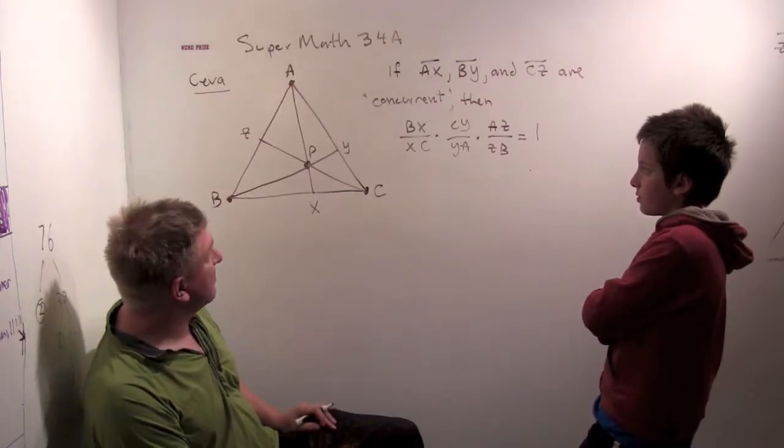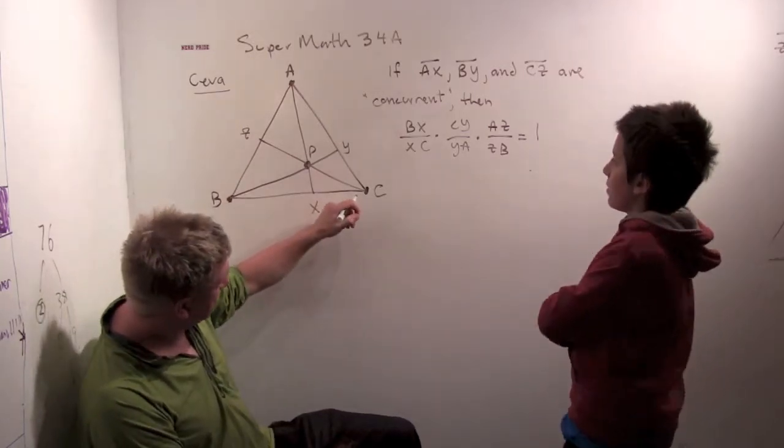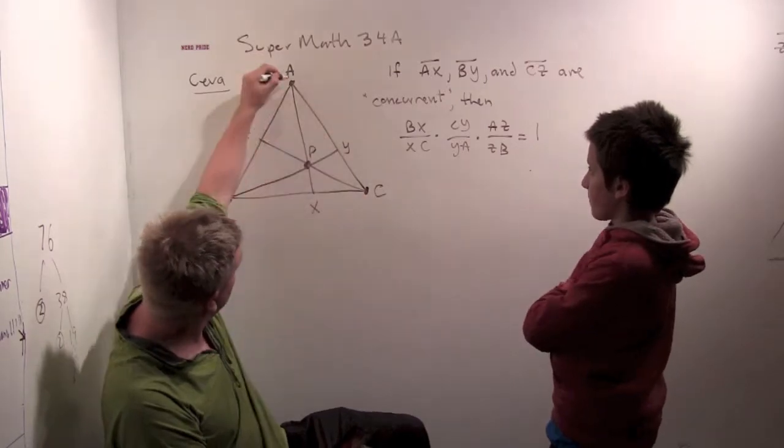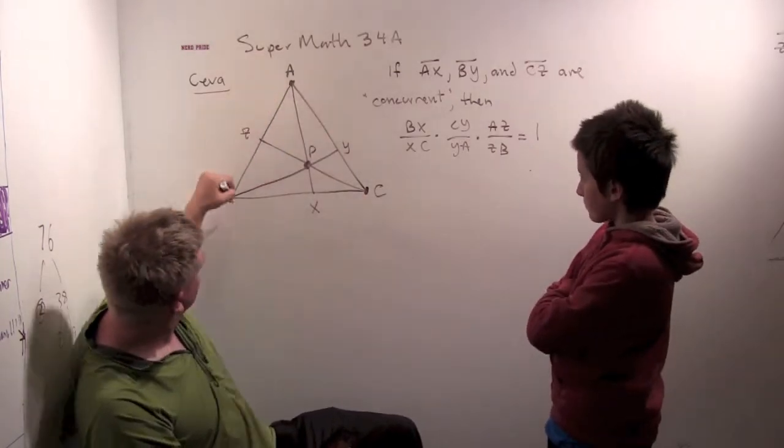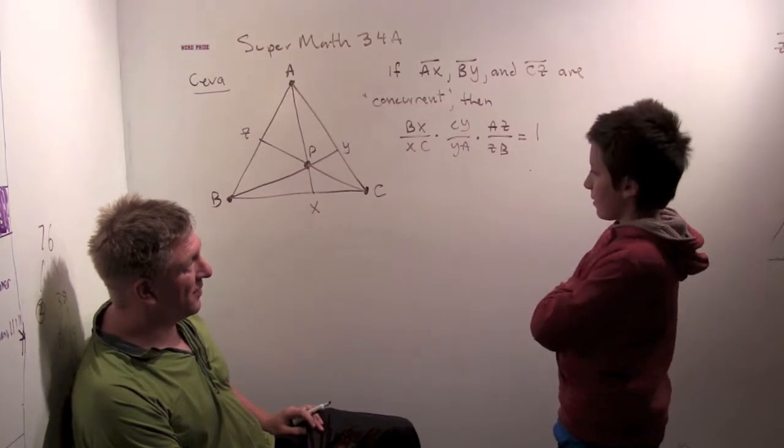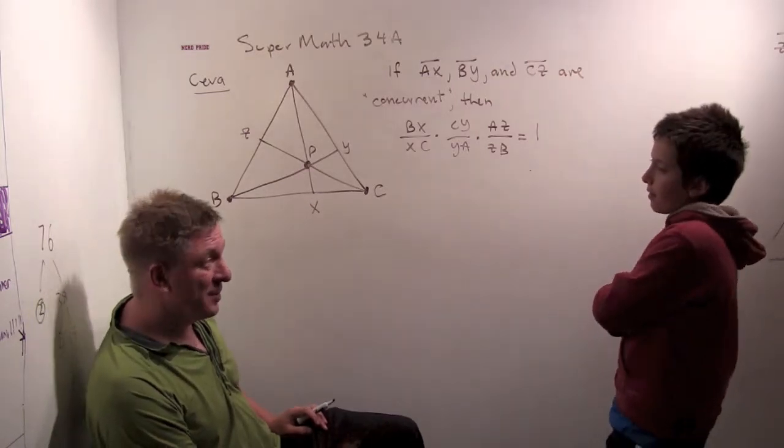Then you have this amazing fact about the ratios. BX divided by XC, times CY over YA, times AZ over ZB equals... One. One. Isn't that incredible? Yeah.